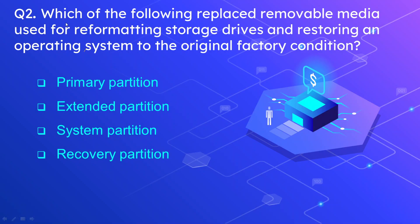Question number 2: Which of the following replaced removable media used for reformatting storage drives and restoring an operating system to the original factory condition? The options are primary partition, extended partition, system partition, and recovery partition. The correct option is recovery partition. This partition is used to restore the operating system to its original or factory default condition when there is some issue or problem with the operating system.